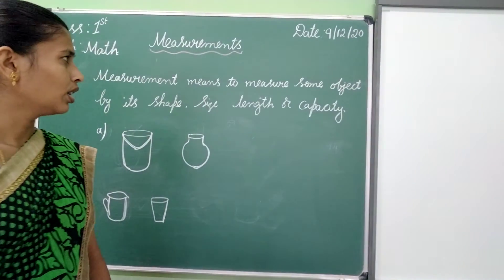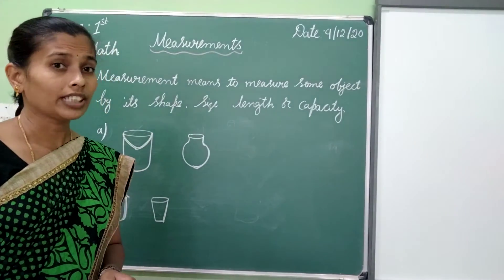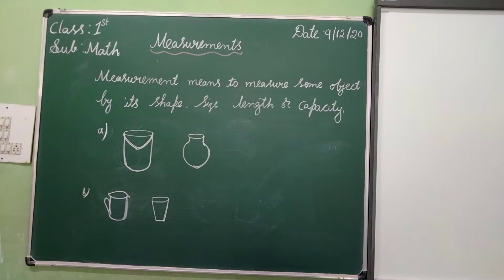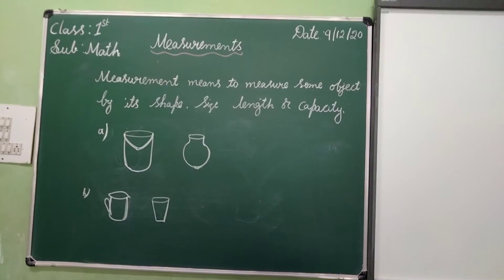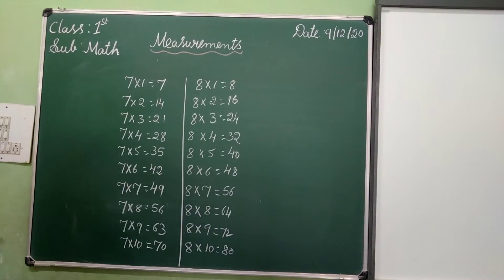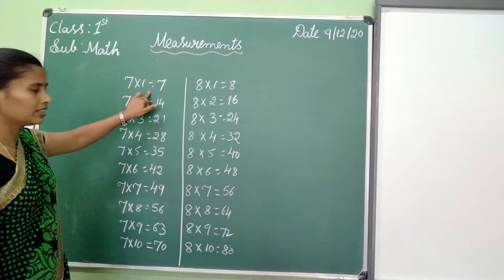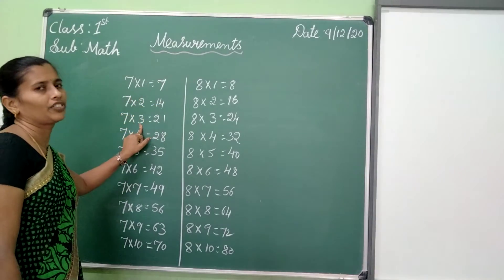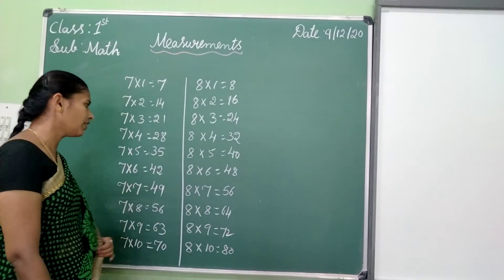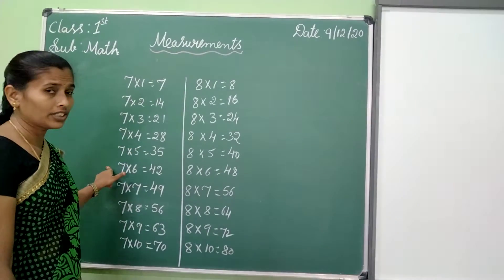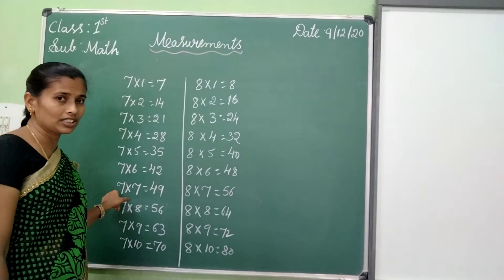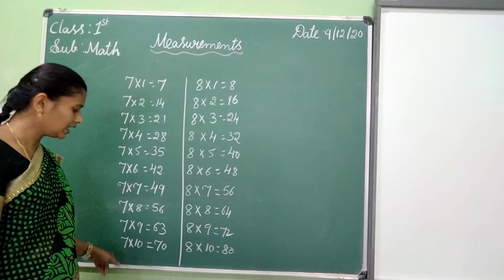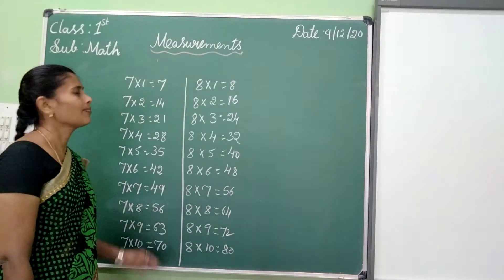I will teach tables. Seven ones are seven, seven twos are fourteen, seven threes are twenty-one, seven fours are twenty-eight, seven fives are thirty-five, seven sixes are forty-two, seven sevens are forty-nine, seven eights are fifty-six, seven nines are sixty-three, seven tens are seventy.